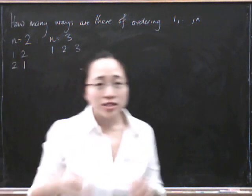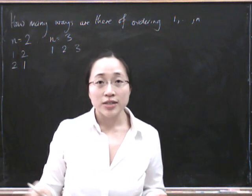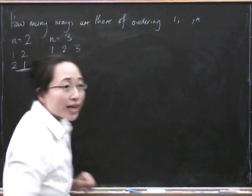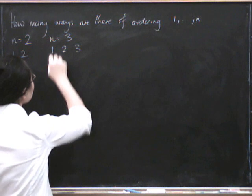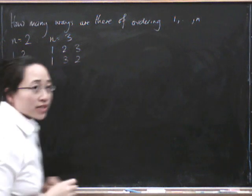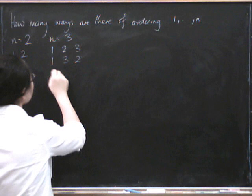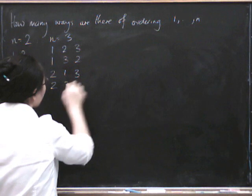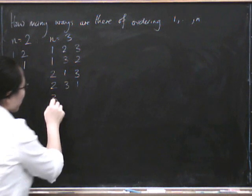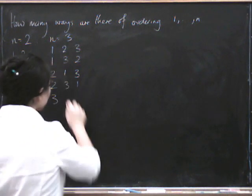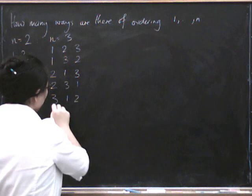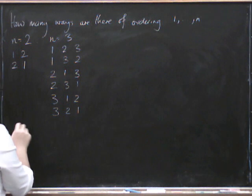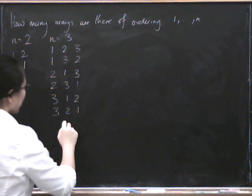So let's do this. When we're trying to write down lots of different things, we should try and do it in some sensible pattern. So let's first start with all the ways beginning with 1: we could have 1, 2, 3 or 1, 3, 2. Now all the ways beginning with 2: we can have 2, 1, 3 or 2, 3, 1. If 3 is at the beginning, we can have 3, 1, 2 or 3, 2, 1. So for n=2 the answer was 2, and for n=3 the answer is 6.